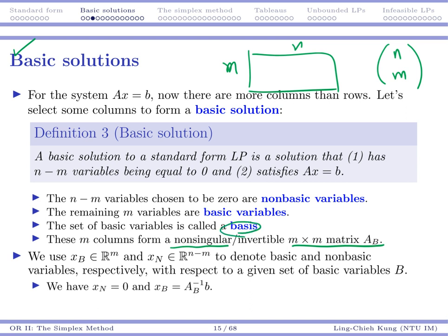So sometimes your m columns do not form a basis, then it does not correspond to a basic solution. If that A_B matrix is non-singular, then you're going to be able to solve A_B X_B equals b. Because in that case it's nothing but A_B X_B equals b, since all other variables are zero.